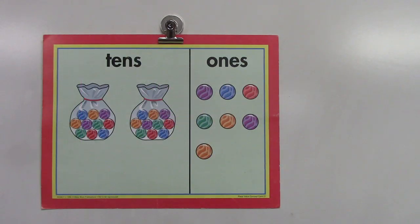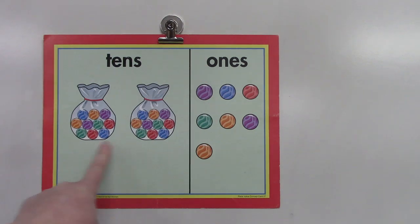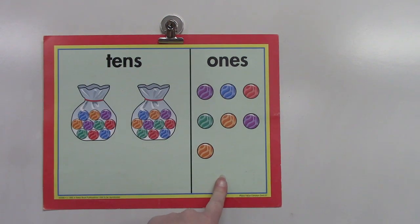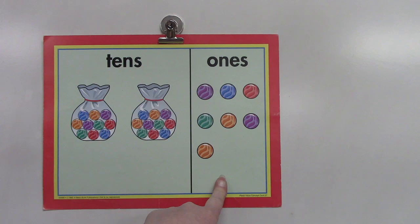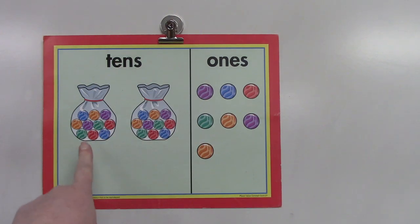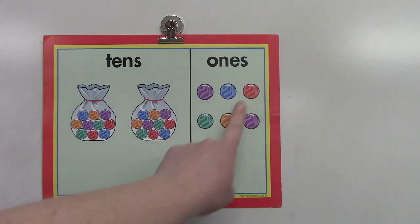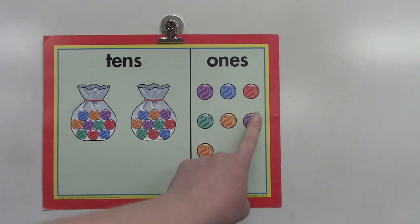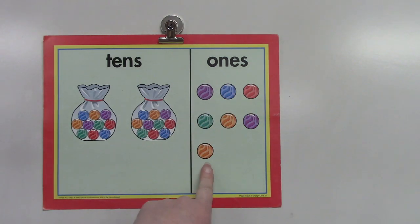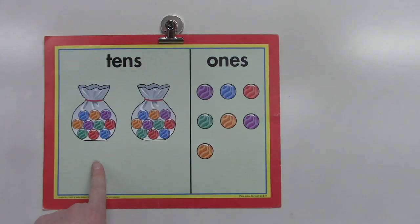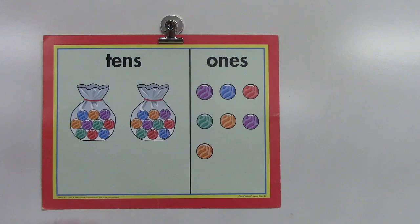Let's take a look at the back of our card. These two bags of marbles show us 10, 20. And there are 7 left over on this side. Let's count it together. 10, 20, 21, 22, 23, 24, 25, 26, 27. There are 7 marbles in the ones place and 2 marbles in the tens place.